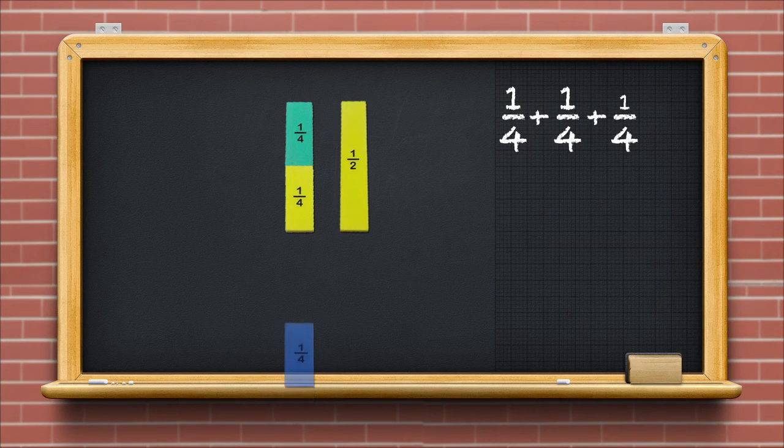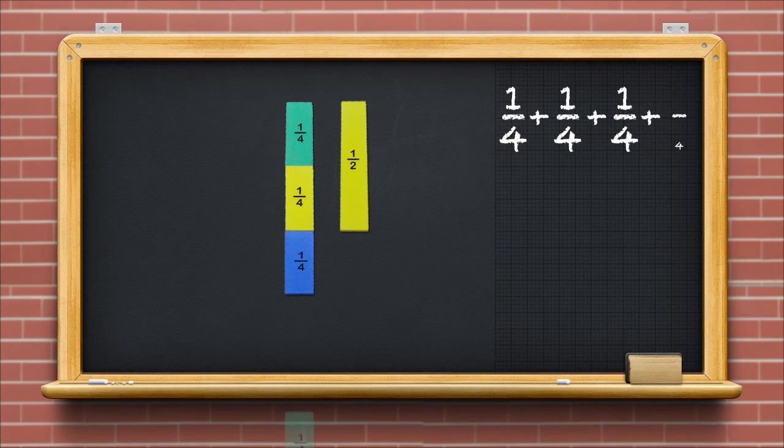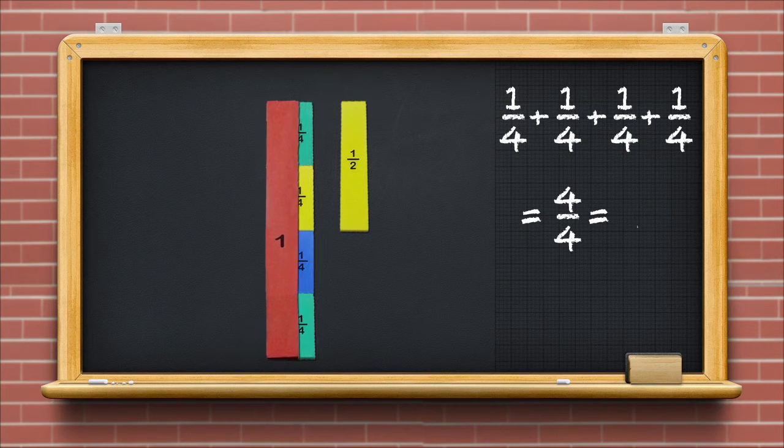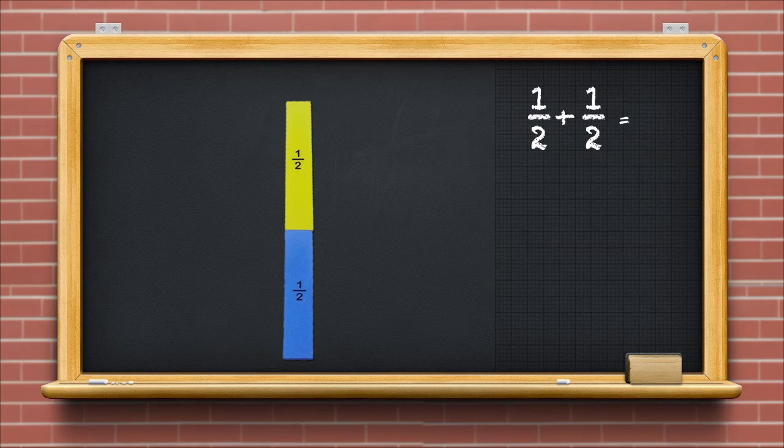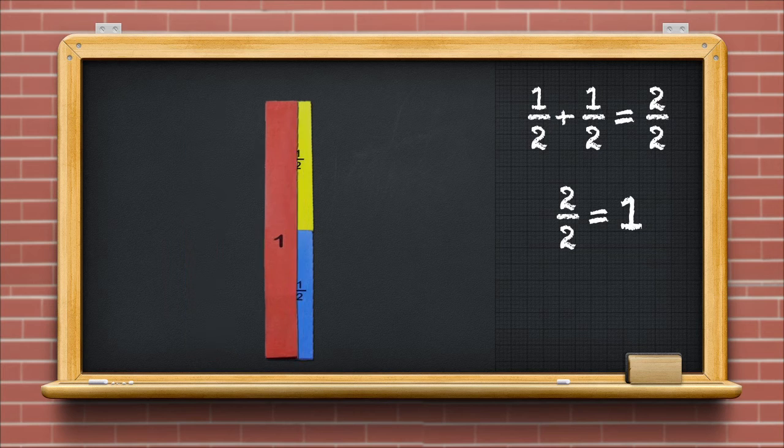If we add 1 upon 4 to this, we now get 3 upon 4. Add another 1 upon 4 to get 4 upon 4, or 1 whole. Similarly, we now see that if we add the fraction 1 upon 2 to 1 upon 2, we get 1 whole.